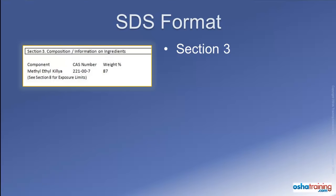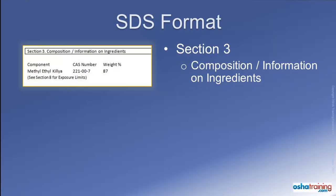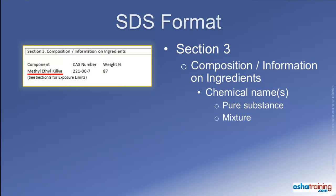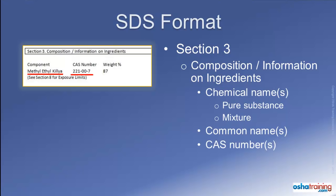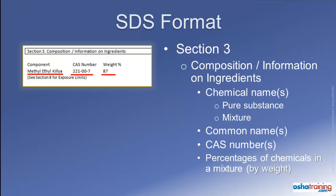Section 3 of safety data sheets, titled Composition and Information on Ingredients, identifies chemicals contained in the product. This could be a single ingredient for a pure substance, or two or more ingredients if the product is a mixture or contains impurities or stabilizers that contribute to the hazards of a product. You will also find the common name and any synonyms, as well as the applicable Chemical Abstracts Services, or CAS number. When the product is a mixture, the safety data sheet will list the concentration of all hazardous ingredients expressed in either percentages or ranges by weight. For chemicals where a trade secret is claimed, there will be a statement that the specific chemical identity and/or its composition have been withheld as a trade secret.